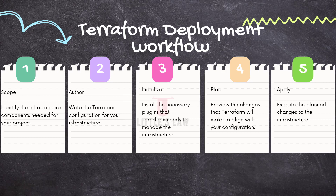The second step is authoring — writing the Terraform configuration for our infrastructure. This involves creating a declarative description of the desired infrastructure state. The third step is terraform init, which installs the necessary plugins that Terraform needs to manage the infrastructure by downloading and configuring the required providers.